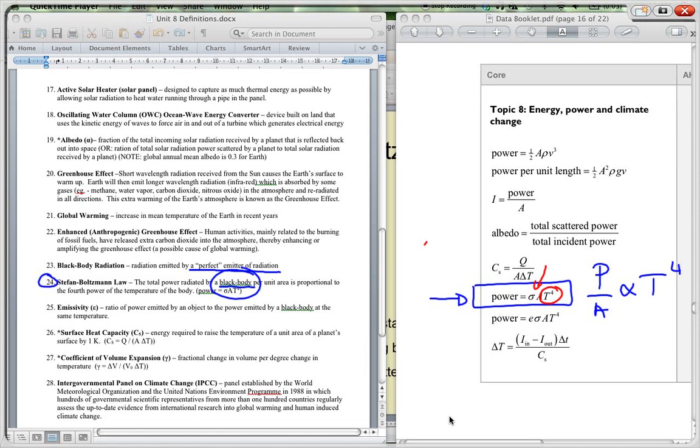Now this sigma here, sigma is Stefan-Boltzmann's constant and it's 5.67 times 10 to the negative 8 watts per meter squared per Kelvin to the negative 4, and that value can be found in the front of your textbook.